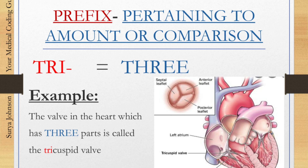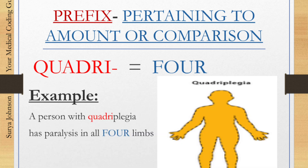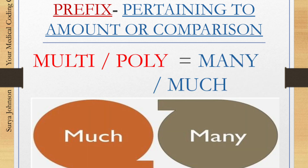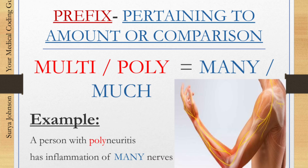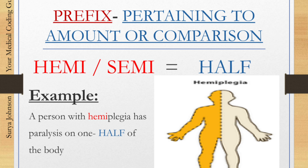So the tricuspid valve means it has three parts. Number four: 'quadri' means four. A person with quadriplegia has paralysis in all four limbs. Fifth: the prefix 'multi' and 'poly' mean many or much. Example: a person with polyneuritis has inflammation of many nerves. Number six: the prefix 'hemi' or 'semi' means half. A person with hemiplegia has paralysis on one half of the body, and a person who is semiconscious is half conscious.